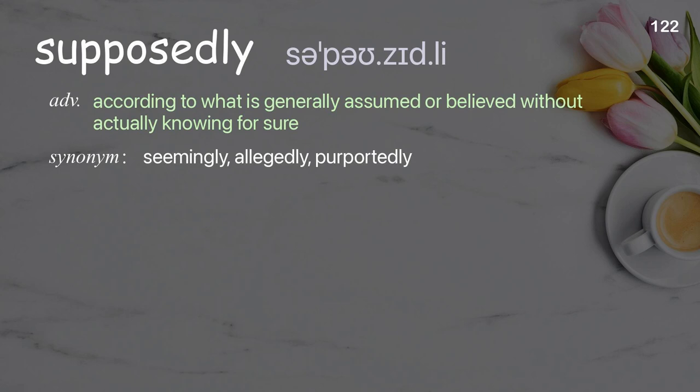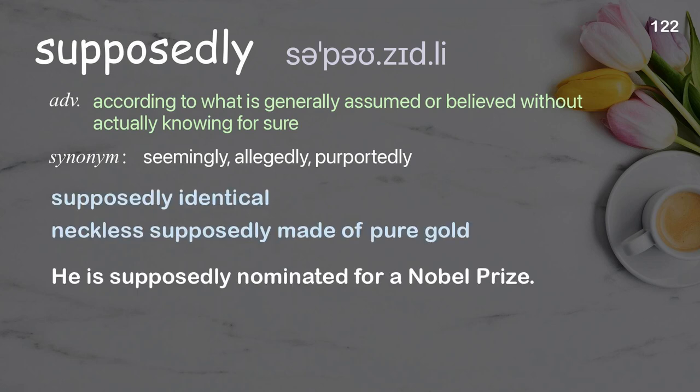Supposedly: according to what is generally assumed or believed without actually knowing for sure. Examples: supposedly identical, necklace supposedly made of pure gold. He is supposedly nominated for a Nobel Prize.